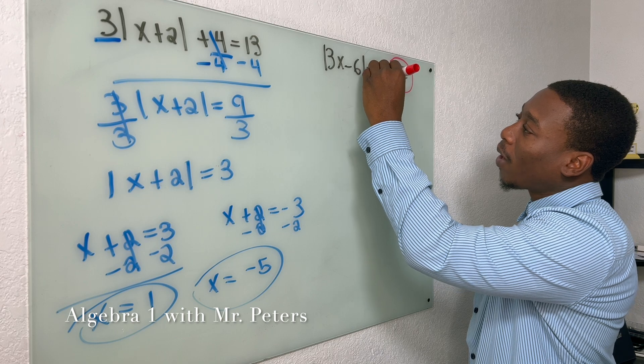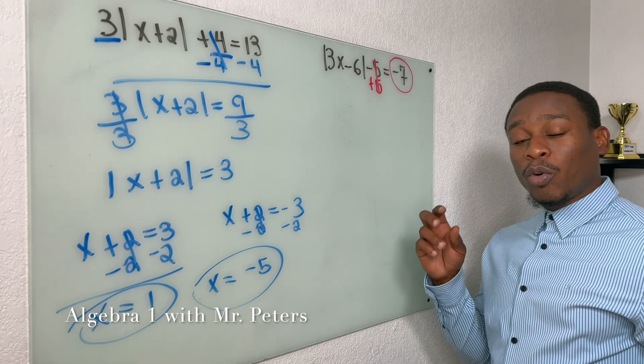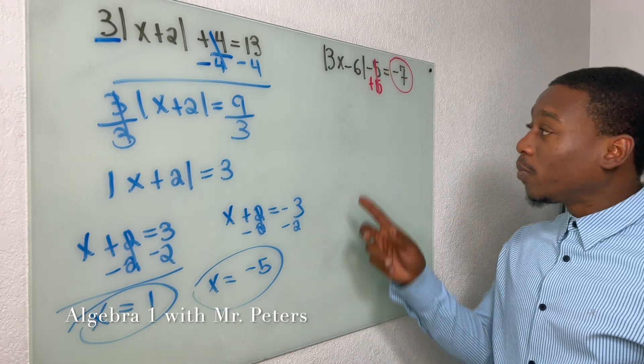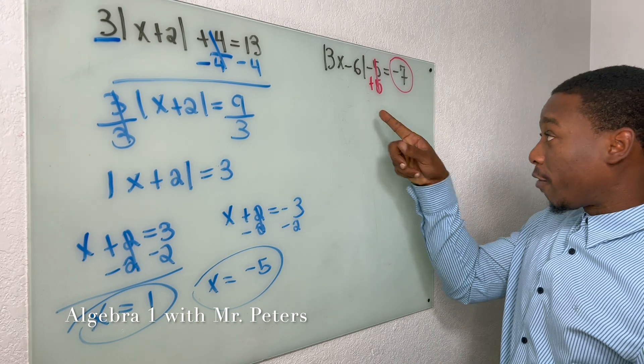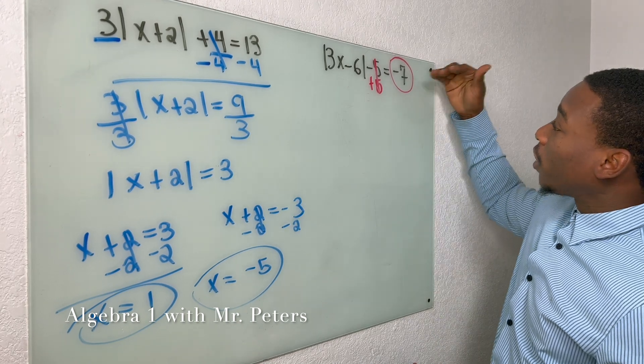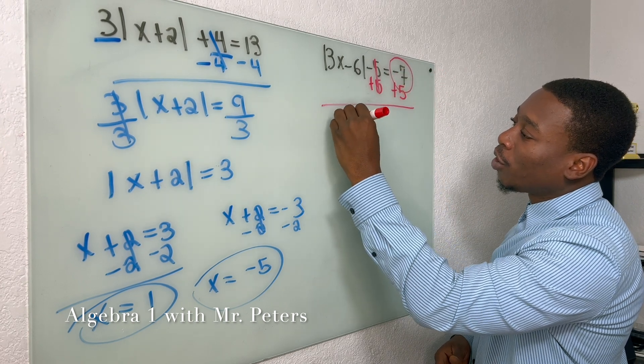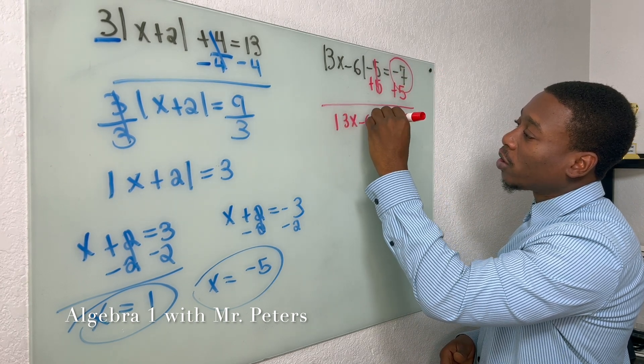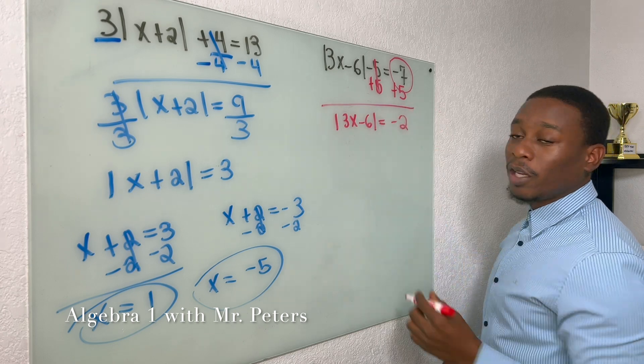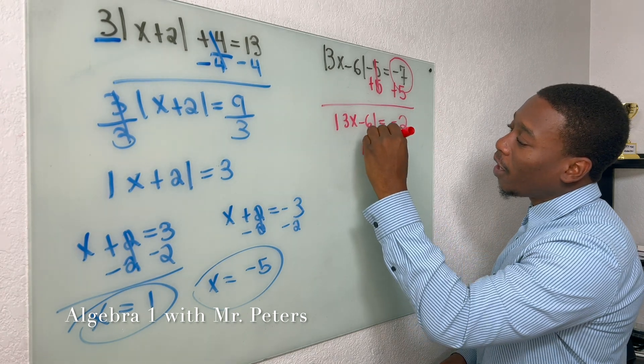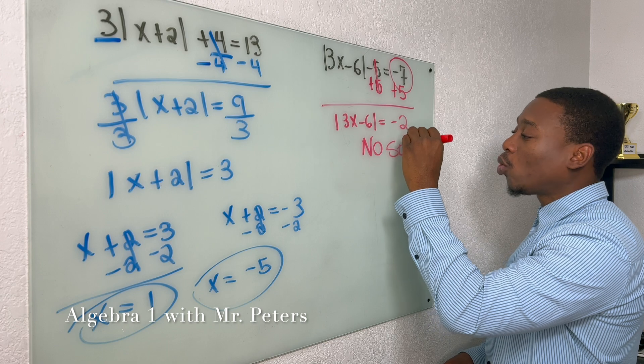But let's just make sure that we still add this five because they will try to trick you. Sometimes you'll add this number over like five and what the equation is equal to will become positive. But in this instance, our answer is going to be equal to negative two, and because it's negative there is no solution.